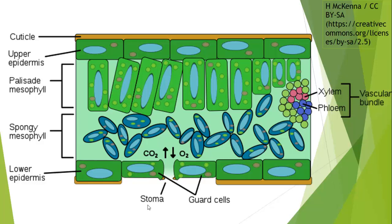Gas exchange works because our palisade mesophyll cells, which are packed full of chloroplasts, are nicely stacked but also have little gaps. Then we have the spongy mesophyll with air spaces between the cells themselves, so carbon dioxide can diffuse in from the atmosphere all the way through. There is another video looking at the structure of leaves — give it a go.